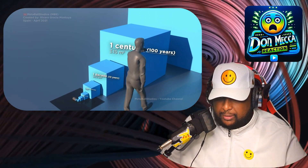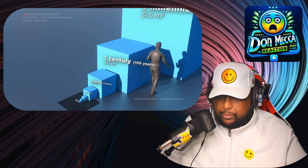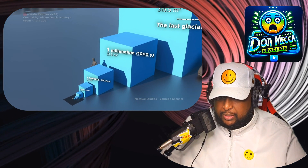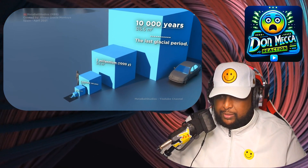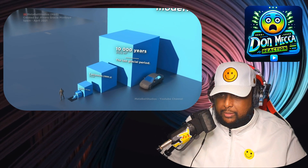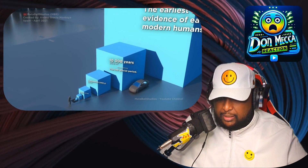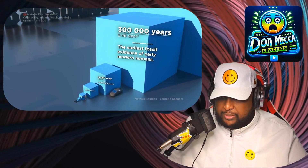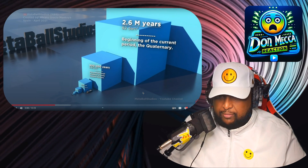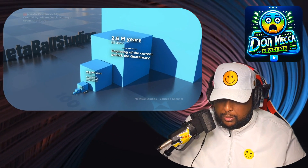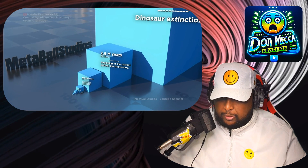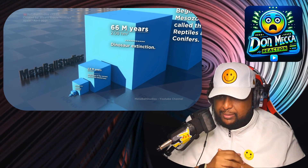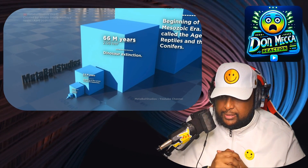One century: three meters square. One millennium — one thousand years: 31.5. Ten thousand years. 300,000 years — earliest fossil evidence of early human beings, beginning of the current period. Dinosaur extinction. 66 million years.